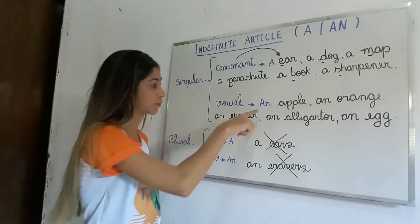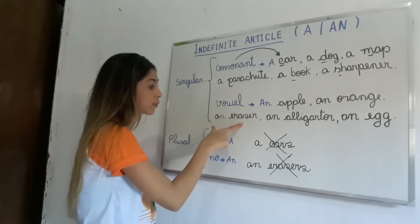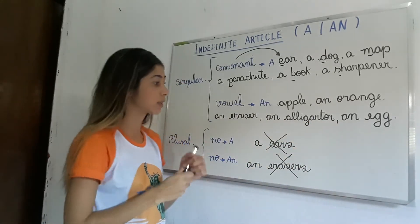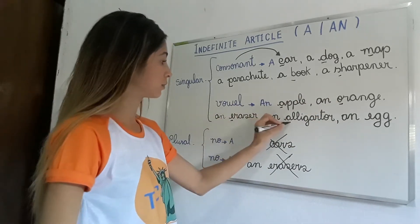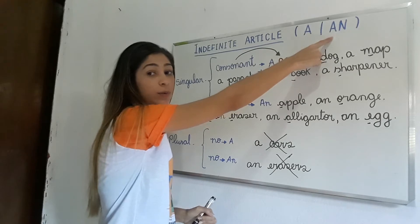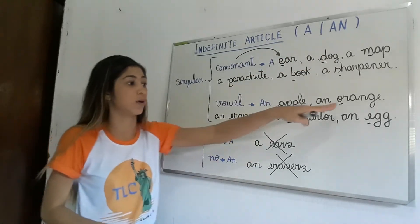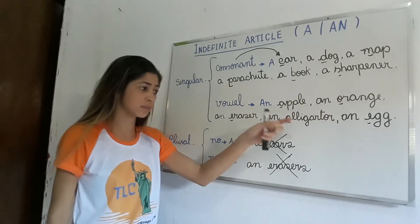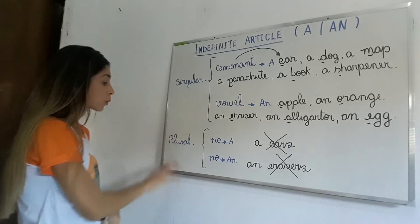So here we have: an apple — uma maçã. An orange — uma laranja. An eraser — uma borracha. An alligator — um jacaré. An egg — um ovo. Notice that all these examples start with a vowel. So before a vowel, I don't use A, I have to use AN.